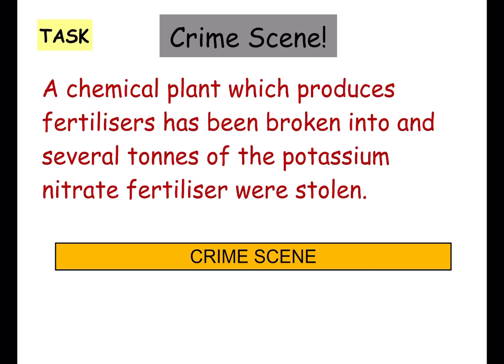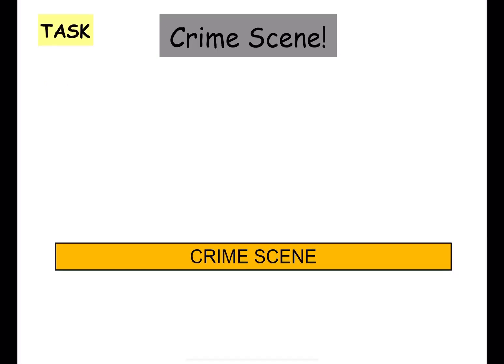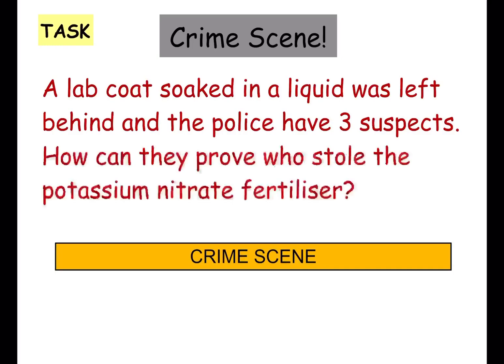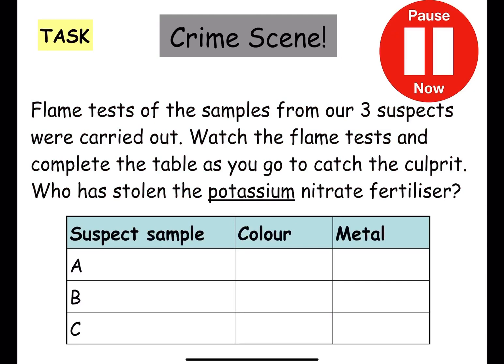A chemical plant which produces fertilizers has been broken into, with several tons of potassium nitrate fertilizer being stolen. A lab coat soaked in liquid was left behind at the scene and the police have three suspects. How can they prove who stole the potassium nitrate fertilizer? Flame tests from samples of the three suspects are carried out and compared against the lab coat. Watch the flame tests and complete the table to catch the culprit.